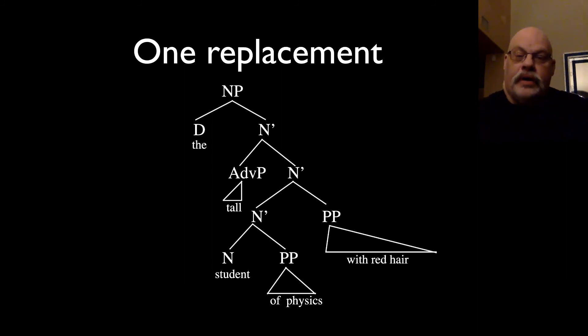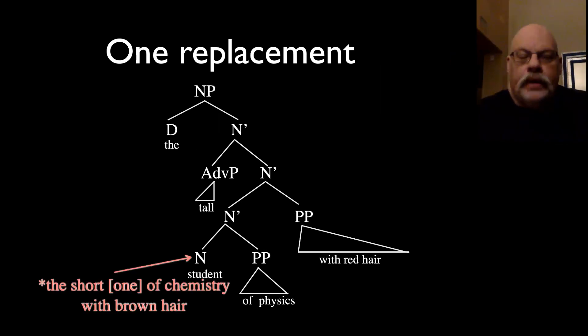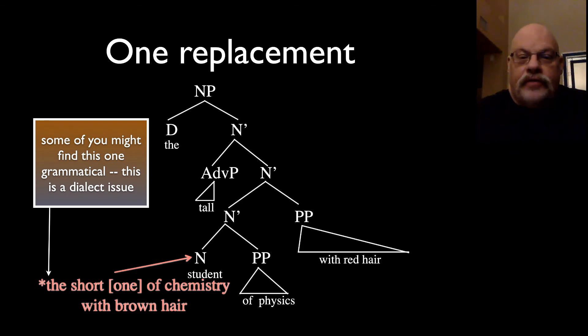So let's go back to those sentences we were talking about and look at how they fare with this more articulated, complicated tree. So one thing you'll note is that you can't replace just the N head. So you can't say the short one of chemistry with brown hair. That's because what you would be doing is replacing that N head. Now there is some dialectal variation here. So some people actually find this sentence okay. In that case, those speakers who have that dialect where this particular noun phrase is all right, you simply have a different one replacement rule. You have a one replacement rule that allows you to target N bar categories and N categories.